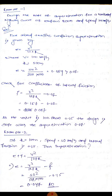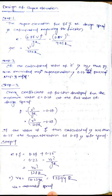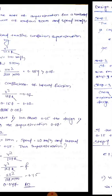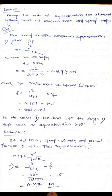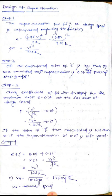Problem: Design the rate of super elevation for a horizontal highway curve of radius 500 m and speed 100 km/h. Since the design speed 100 km/h is above 75 km/h, we use the formula e equals v² by 225. So e equals 100² divided by 225 × 500 equals 0.089. Since 0.089 is greater than 0.07, we check the lateral friction coefficient.